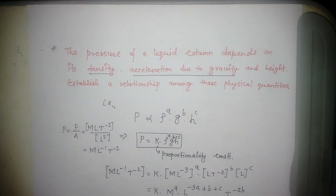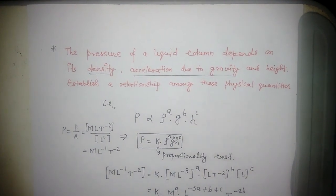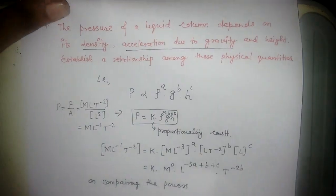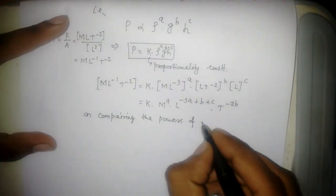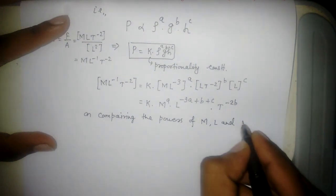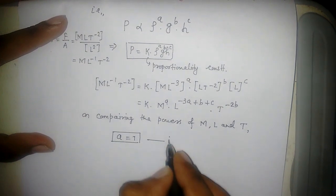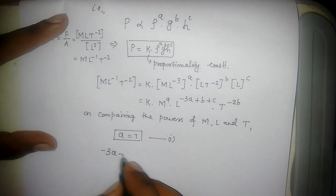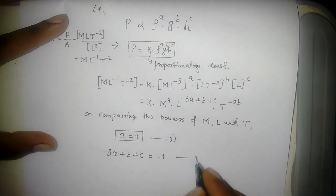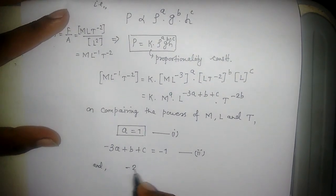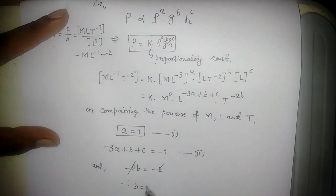On comparing the powers of M, L, and T on both sides, we get: a = 1, -3a + b + c = -1, and -2b = -2. Therefore, b = 1.